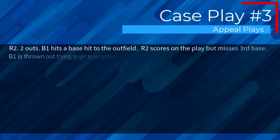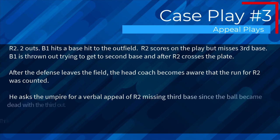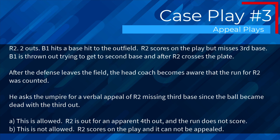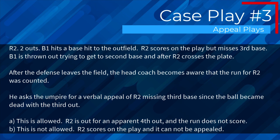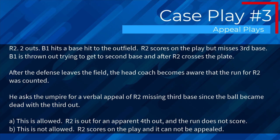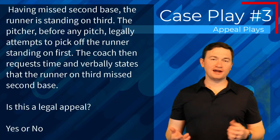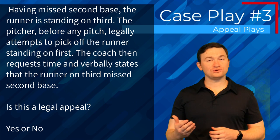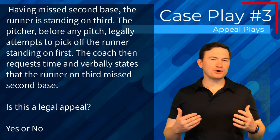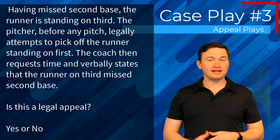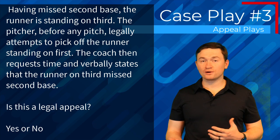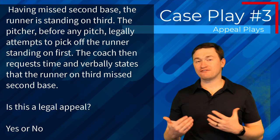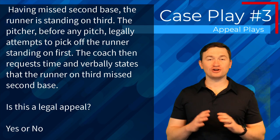Case play number three: R2, two outs. B1 hits a base hit to the outfield. R2 scores on the play but misses third base. B1 is thrown out trying to get to second base, after R2 crosses the plate. After the defense leaves the field, the head coach becomes aware the run was counted and asks the umpire for a verbal appeal of R2 missing third base. The correct answer is B — this is not allowed. R2's run scores because the defense already left the field, so the appeal cannot be accepted. As umpires, we need to be aware when fielders leave fair territory, because at that point they're no longer allowed to appeal.